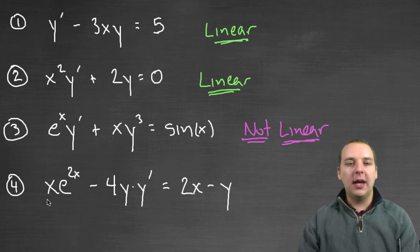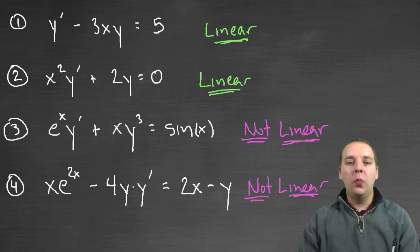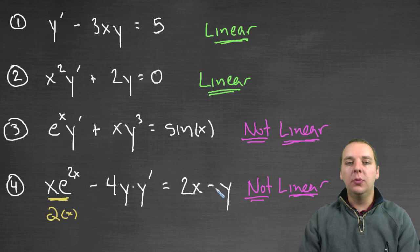Lastly how about this one: xe to the 2x minus 4y times y prime equals 2x minus y. Turns out this guy's not linear. Let me go through these one at a time. Is this guy an issue? No. You could rearrange these terms and put him on the right. This guy could be your q of x. He's just in the wrong spot. We could move him to the right hand side to be over here with the 2x.